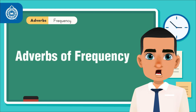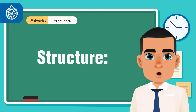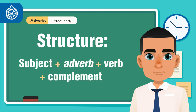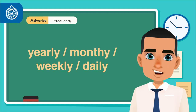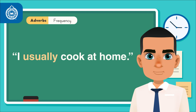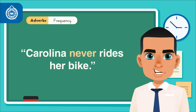Adverbs of frequency. It expresses how often an action takes place. Its structure goes as: subject plus adverb plus verb plus complement. Adverbs that describe frequency are yearly, monthly, weekly, and daily. For example: I usually cook at home. Carolina never rides her bike.